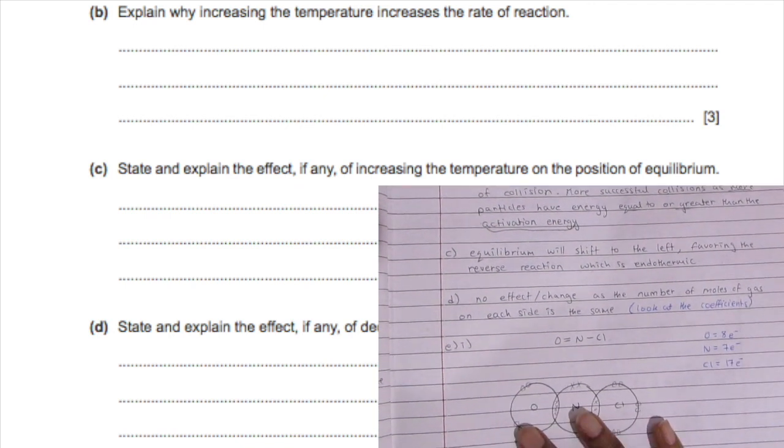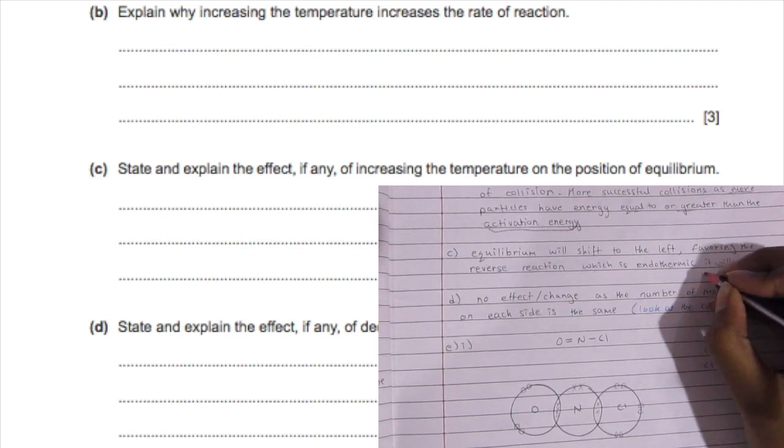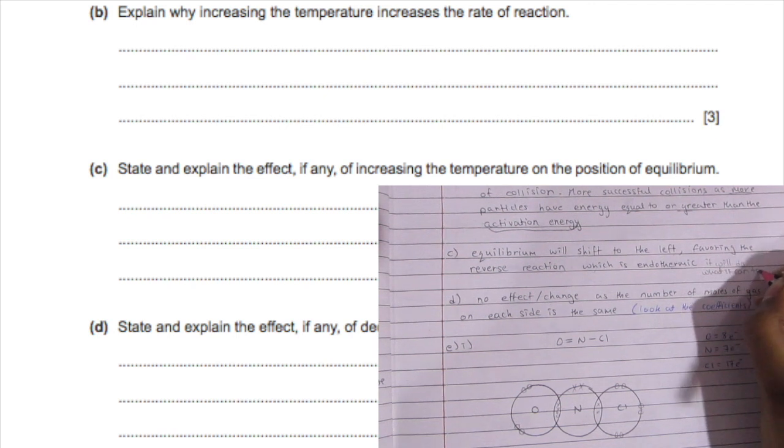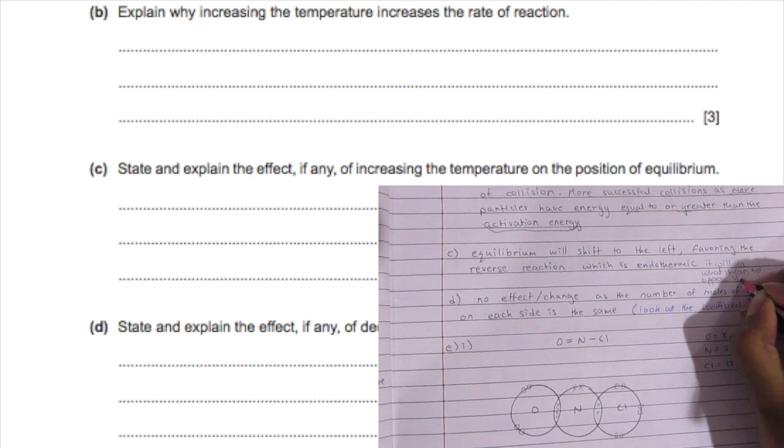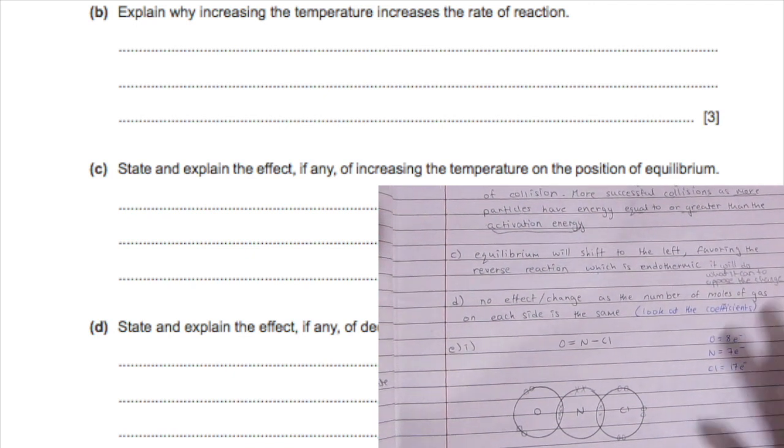This will have an effect on equilibrium because the forward reaction is exothermic. The equilibrium will oppose this change and favor the reverse, endothermic reaction. Endothermic reactions take in heat, so instead of accepting extra heat, it takes it in and favors the reverse reaction.